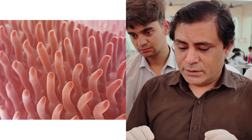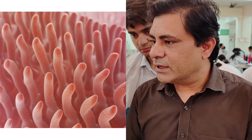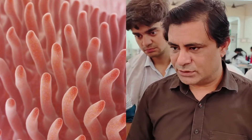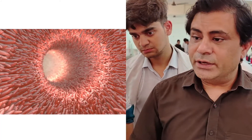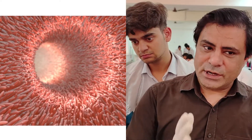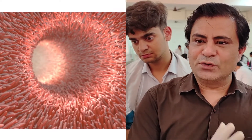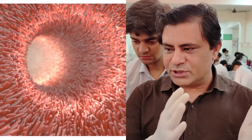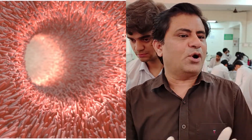Over these Valves of Kerckring and in the entire mucosa, you find a large number of finger-like projections called intestinal villi. These are just visible to the naked eye, around one millimeter. These villi increase the surface area for absorption by about eight times. Again, the length and density of the villi also keeps decreasing from proximal to distal.